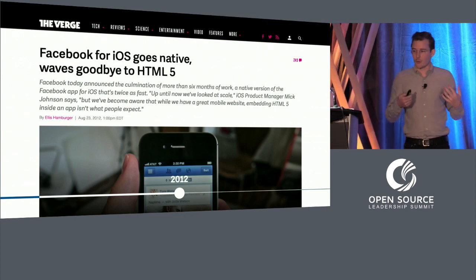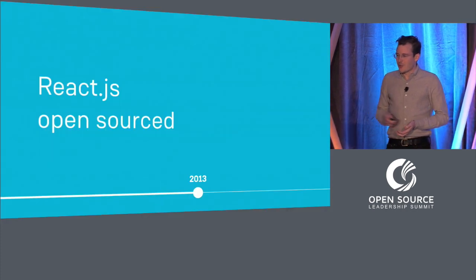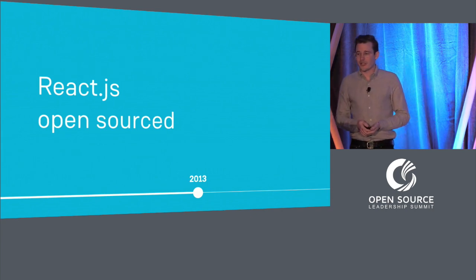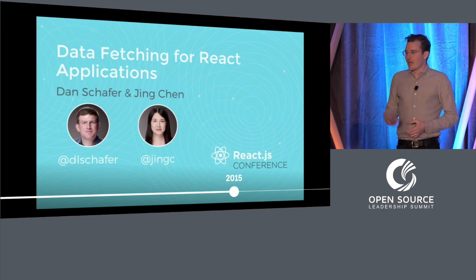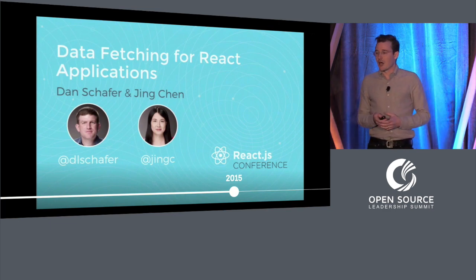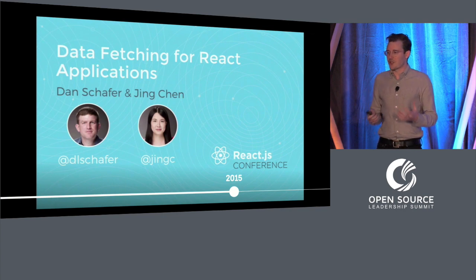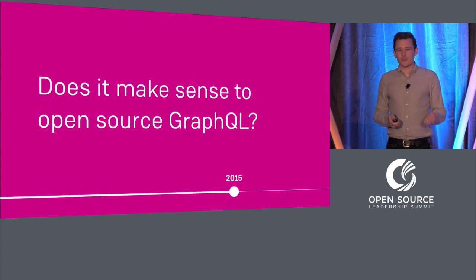Around the same time, others in our group had started another project — React. The next year in 2013, we open-sourced React, which ultimately became one of Facebook's most important projects, and it really highlighted the value of open source to our team. A couple years later, my teammates gave a really amazing talk about Relay, which is a framework that ties together React and GraphQL. It produced a ton of interest, and so the team was inspired to share Relay with the open-source community. But they couldn't do that without GraphQL, and so we thought: does it make sense to open-source GraphQL?